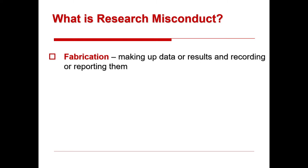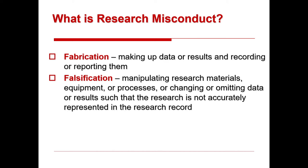So what is research misconduct? It is three things. First, it's defined as fabrication — the making up of data or results and recording or reporting them. The second key component of scientific misconduct is falsification, which is slightly different. That's the manipulation of research materials, equipment, or processes, or changing or omitting of data or results such that the research is not accurately represented in the research record.